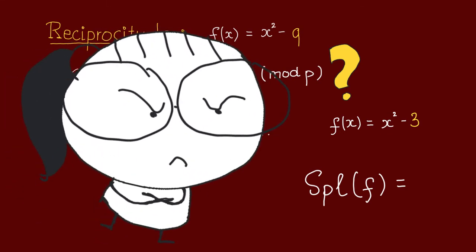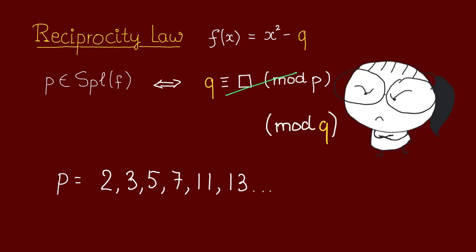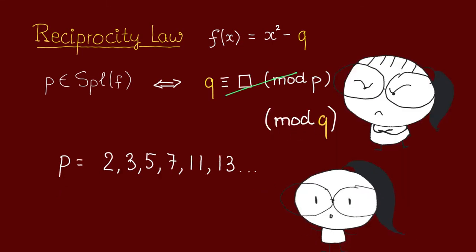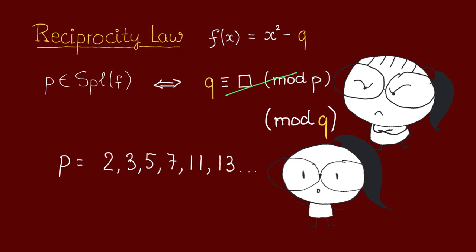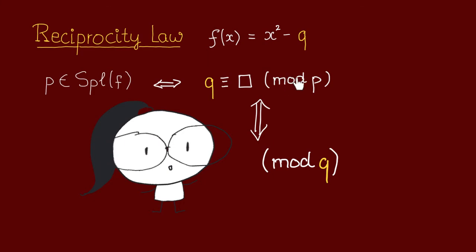This is really not good at all. So ideally we would like to replace this condition with some condition modulo q. Because whereas there are infinitely many values of p to check, our q was fixed.